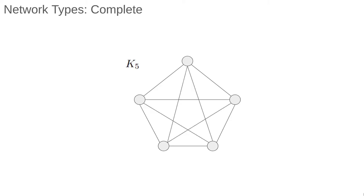The network with n nodes, where all possible edges are present other than self-edges, is called the complete graph of order n. This is usually denoted with a capital K and a subscript for the number of nodes.